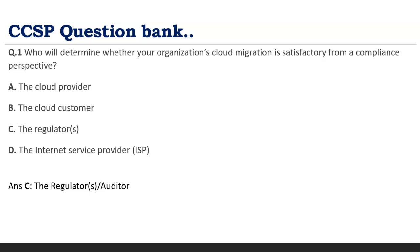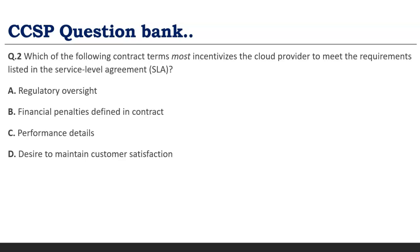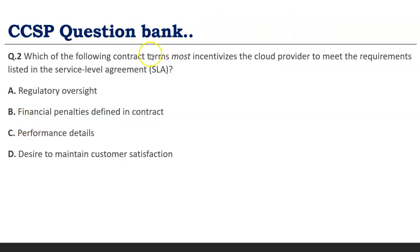Second question: Which contract term most incentivizes the cloud provider to meet the requirements listed in the service level agreement? The options include regulatory oversight, performance details, desire to maintain customer satisfaction, and financial penalties. While the CSP will try to use all of these to maintain SLAs, the main motivation is financial penalties. If the CSP does not follow the norms decided in the SLA, financial penalties defined in the contracts will be applicable.